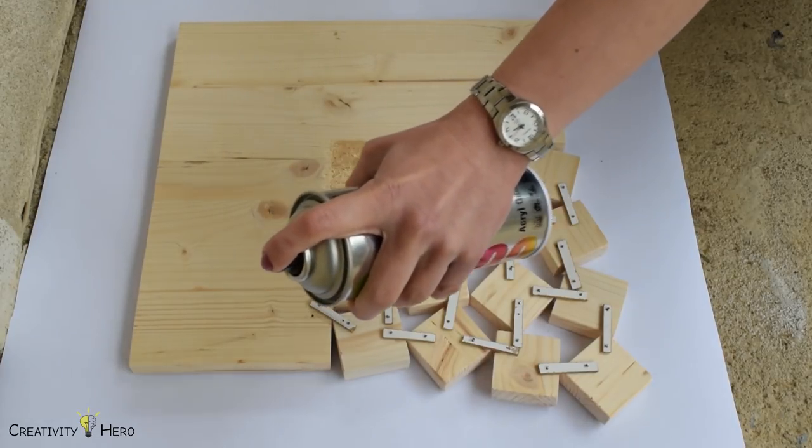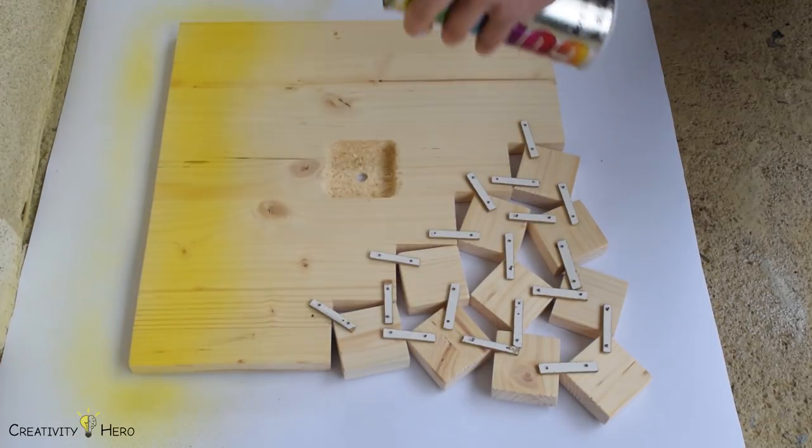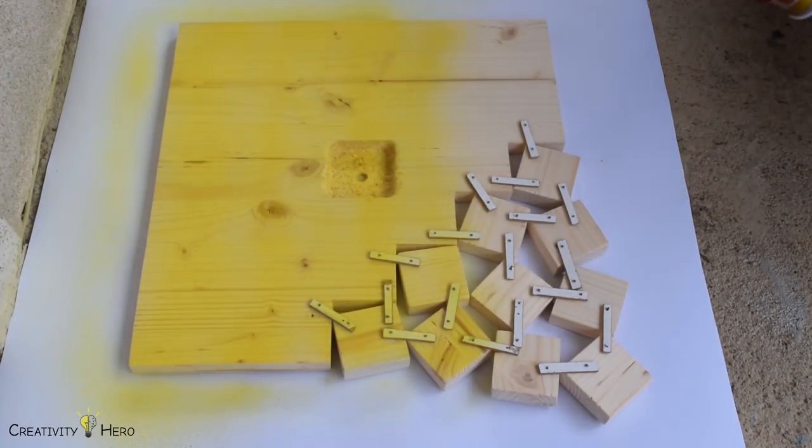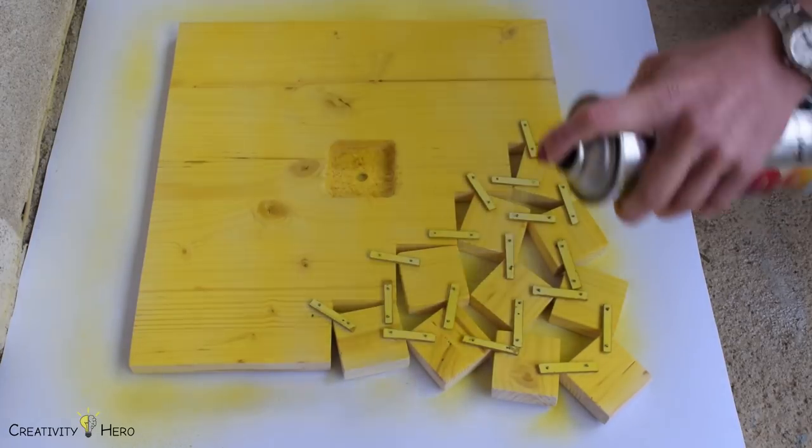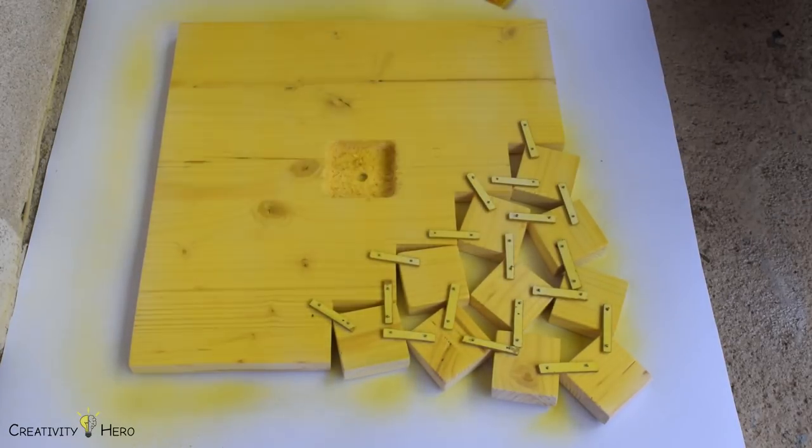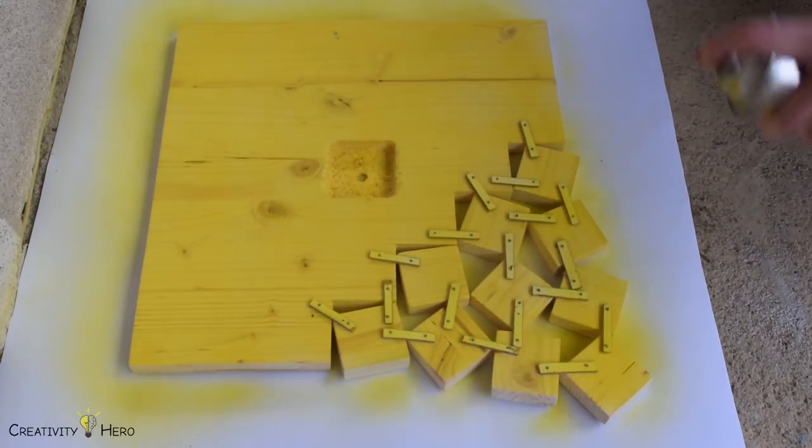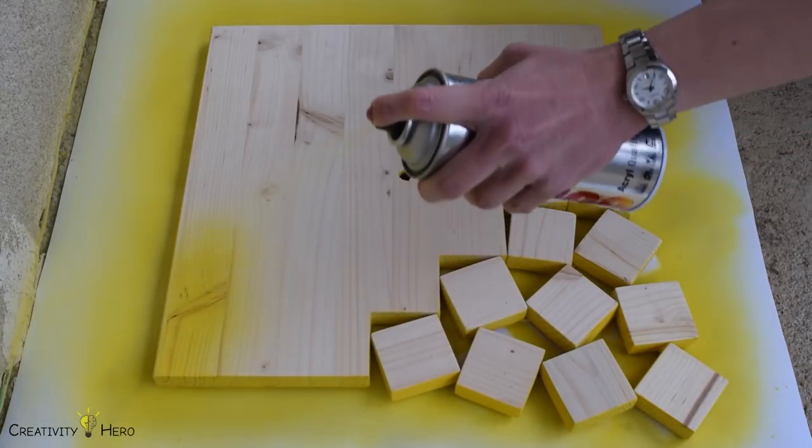The next step is to spray both sides of the clock. I used yellow spray paint but you can choose any color you want. The secret to get the perfect paint job is to spray from at least 20 cm distance, always keep your hand moving and put several lighter coats to avoid drips.